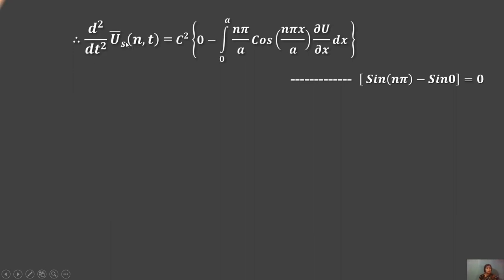The term involving sin(nπ) vanishes because sin(nπ) = 0 for all integer n. For example, sin(π) = 0, sin(2π) = 0, and so on. Therefore the first boundary term equals zero.